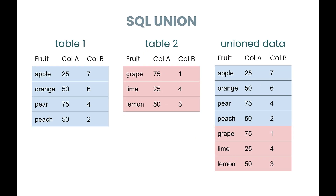The other way to combine data is with a UNION. With a JOIN we're combining columns, and in a UNION we're combining rows. In this example you can see the row values from table two are essentially appended to the row values from table one to create this union dataset. You'll also notice that I've got the same fruit values and columns A and B in both table one and table two - this is usually the case with UNIONs: you have very similar datasets with similar dimensions and metrics that you're appending together.